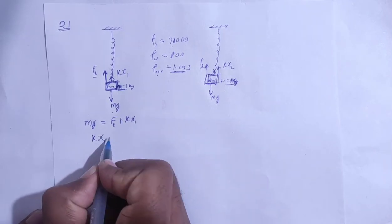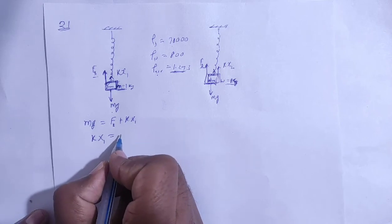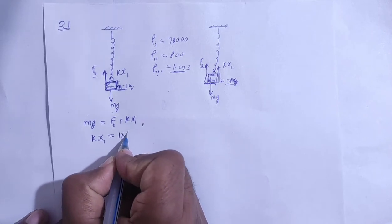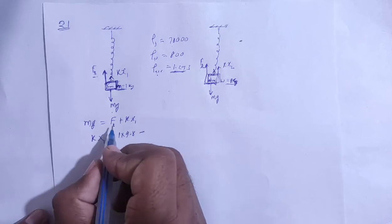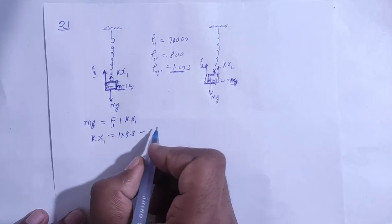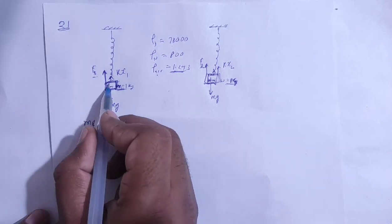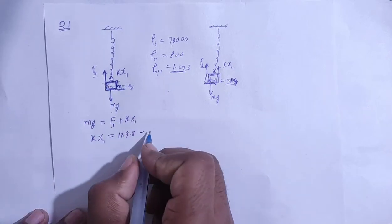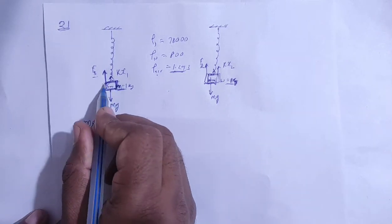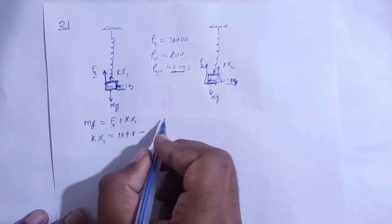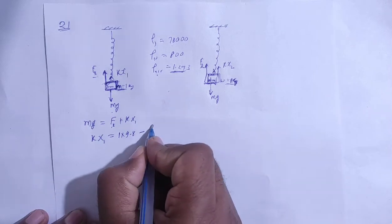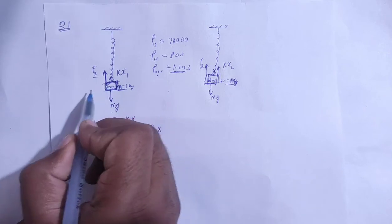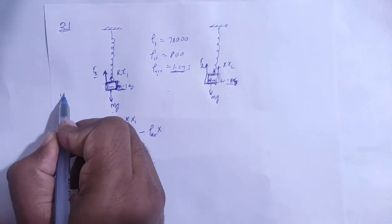mg equals buoyant force plus kx1, so the restoring force kx1 equals mg minus buoyant force. mg means 1 × 9.8, minus the buoyant force, which is the weight of air displaced. Because the medium here is air, the buoyant force equals the weight of air displaced, which is density of air times volume times g.